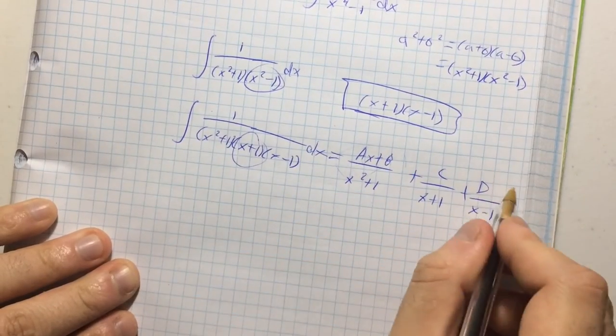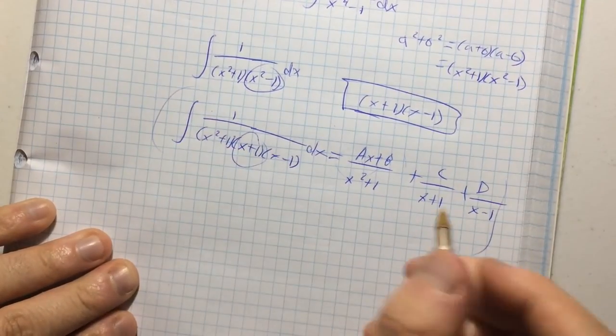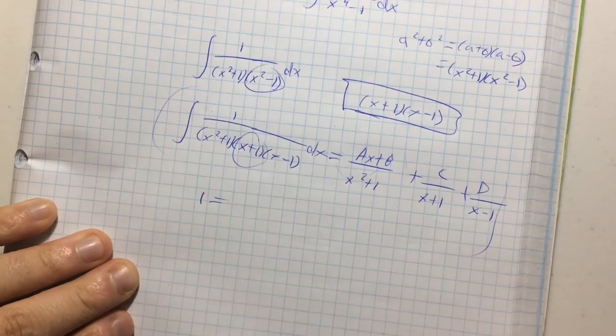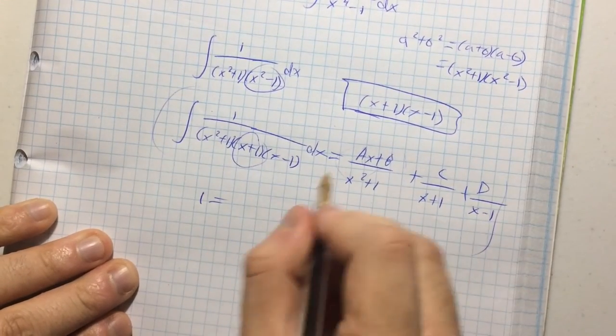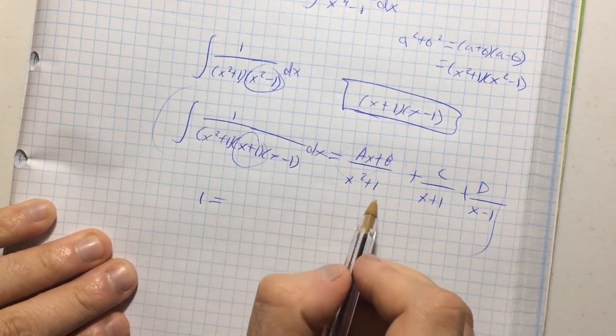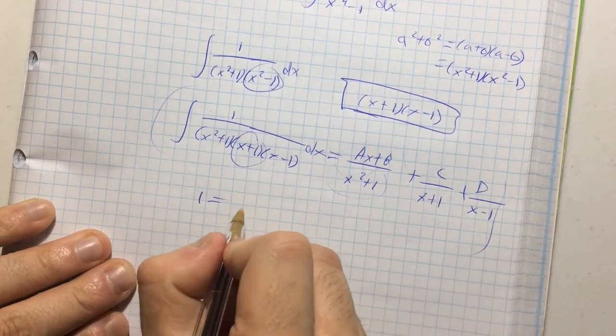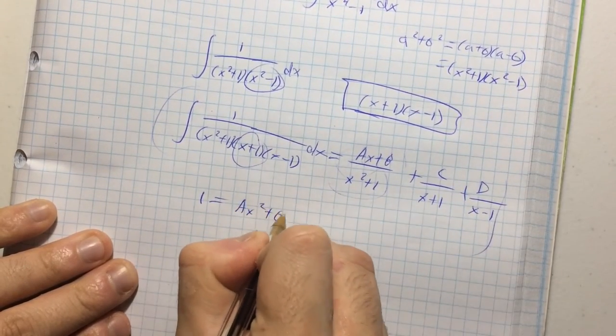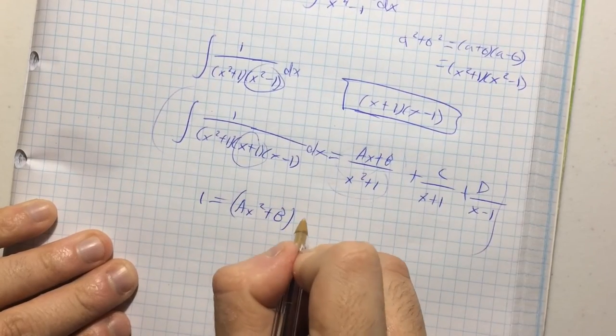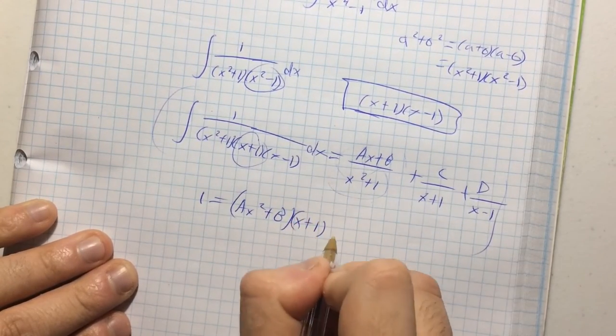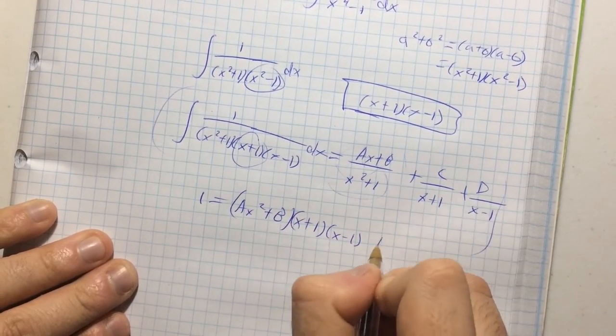So, now, if I multiply the whole expression by the denominator, what's going to happen? Well, I'm going to get one is equal to ax plus b is going to be multiplied by everything except this. So, ax squared plus b, and then this will be multiplied by x plus one, x minus one, plus c,